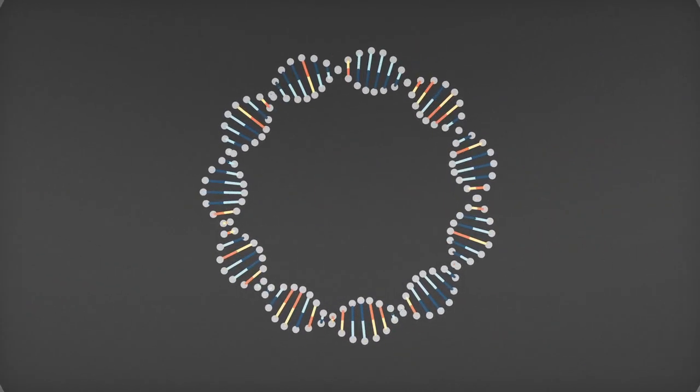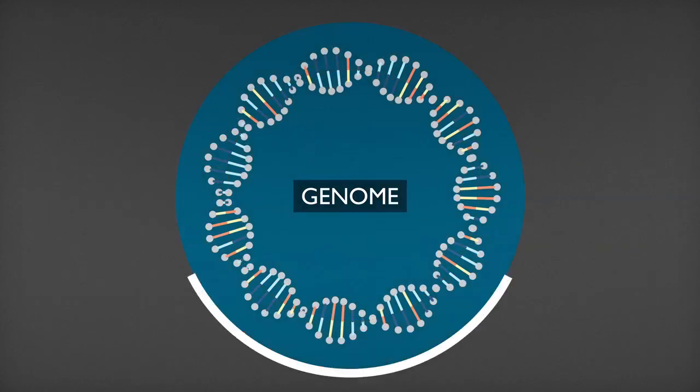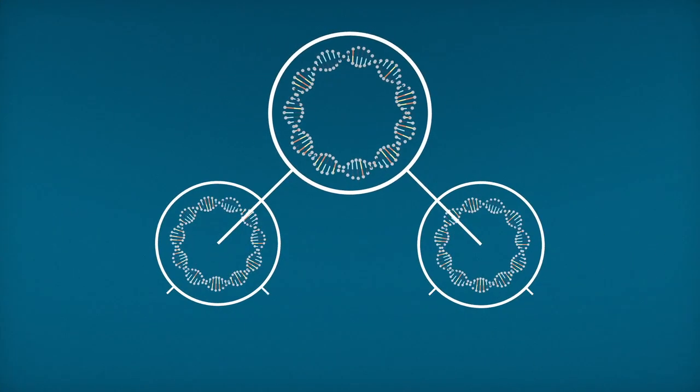The complete set of instructions encoded in an organism's DNA is called its genome and is passed from parent to offspring during reproduction.